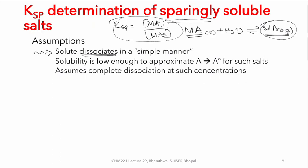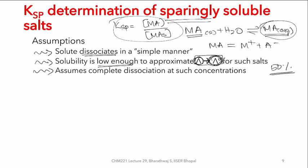The solute M and A are expected to dissociate as M⁺ and A⁻ and nothing more complicated. Subsequently, the solubility of such a sparingly soluble salt is assumed to be low enough that one can estimate the conductance at that concentration and approximate it to the conductance at infinite dilution of such salts. This approach also assumes complete dissociation at concentrations where the salt is sparingly soluble — you cannot have 50% dissociation and expect proper conductance measurements.